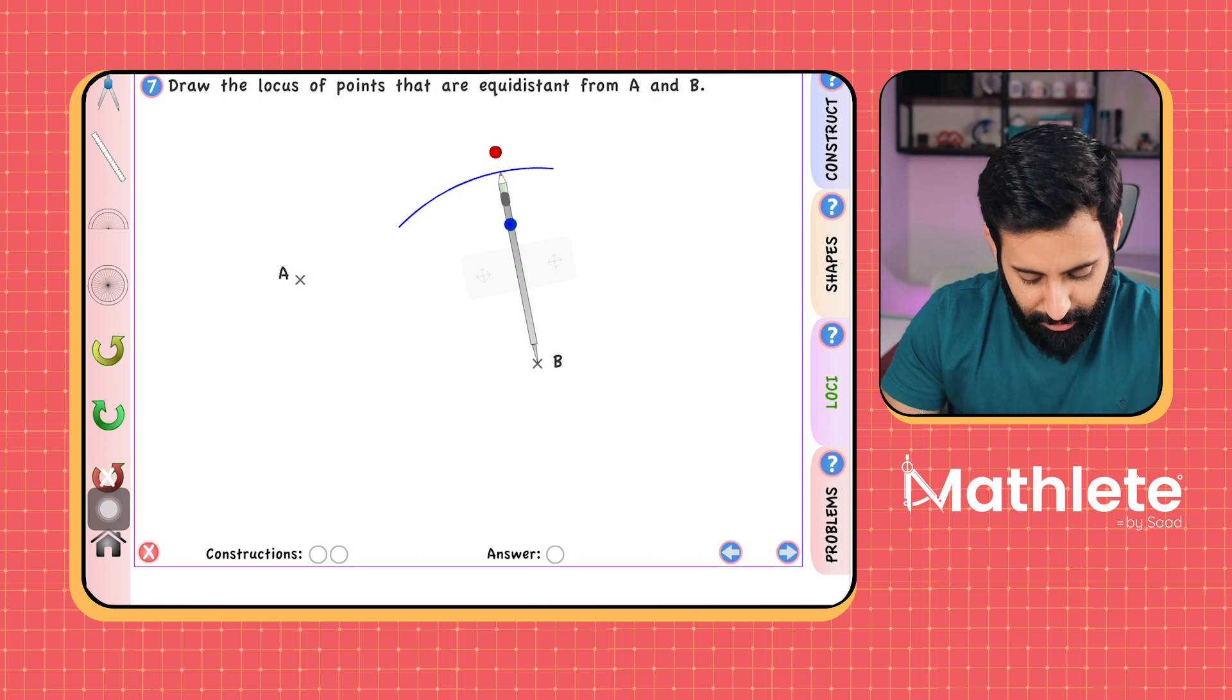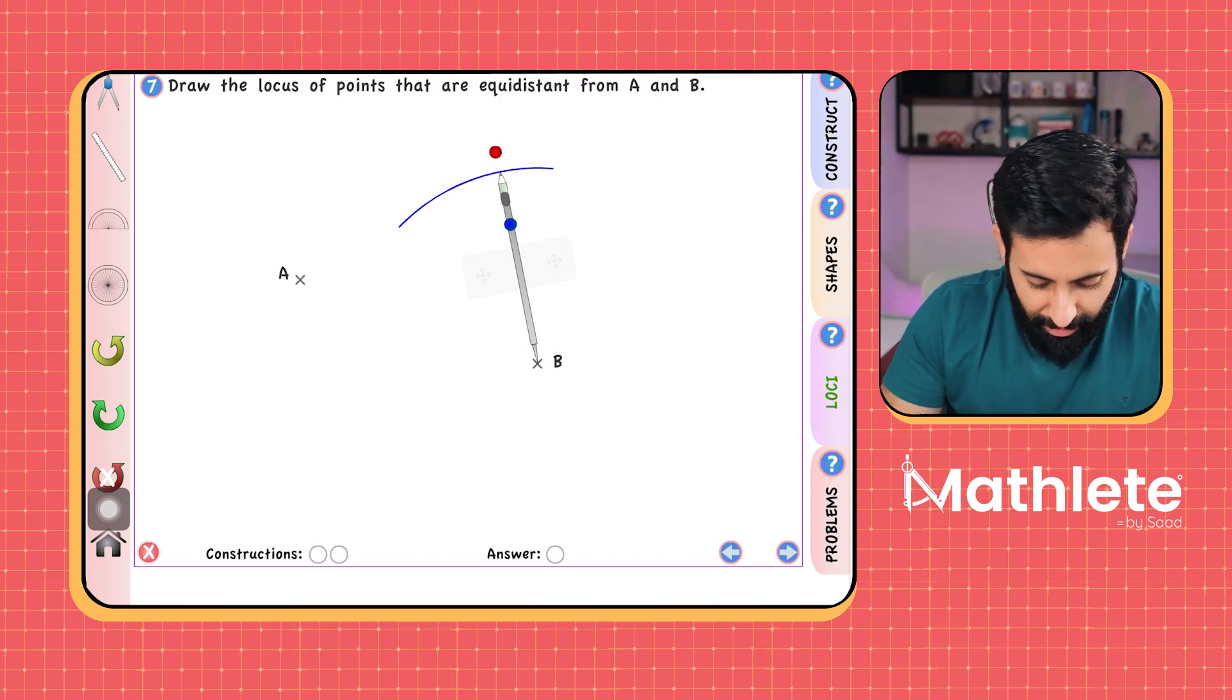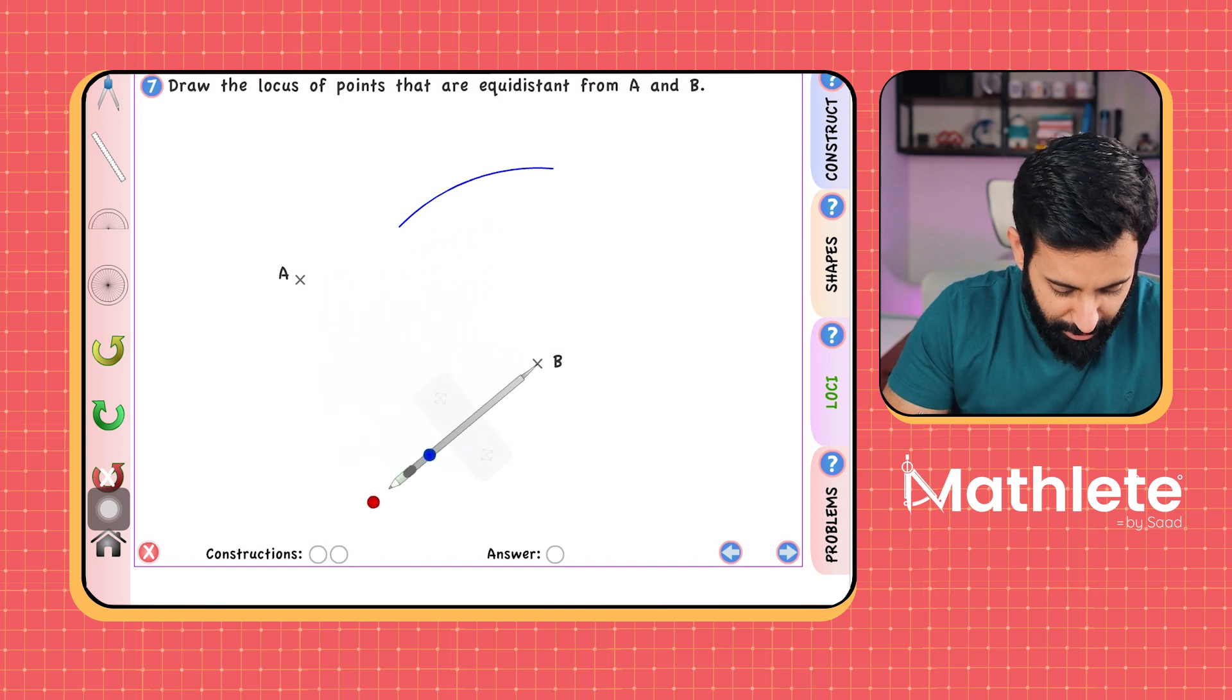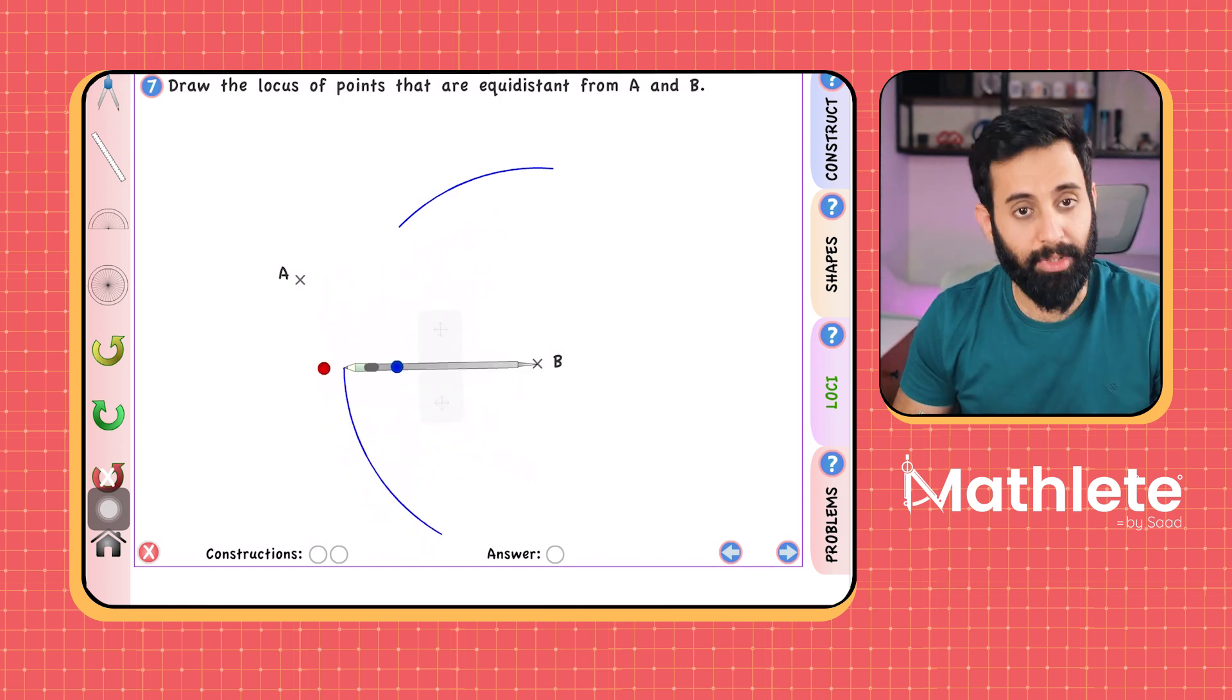Okay, now don't make like small small arcs, just make sure that you are generous with your arcs. So here's an arc, now make an arc on one side and then make another arc on the opposite side. And like I said, be generous with your arcs.